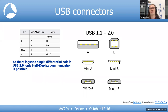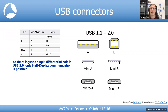The USB peripheral handles timeouts in hardware. For example, when the host reads data, the peripheral will NAK the transaction unless the firmware has already armed the endpoint with data. Similarly, when the host writes data, the device will NAK if the endpoint buffer isn't empty.